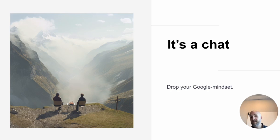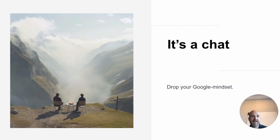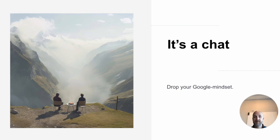Don't forget that it's a chat, so you need to drop your Google mindset. This was perhaps the most prevalent mistake I made when I started using ChatGPT — I treated it like Google. I asked it one thing, and when I didn't get the response I wanted, I just started over completely. But it doesn't work that way. You can interact with it — say that wasn't what I was looking for, can you provide this instead, or look at it from a different angle. You can bounce back and forth until it yields the result you're looking for.